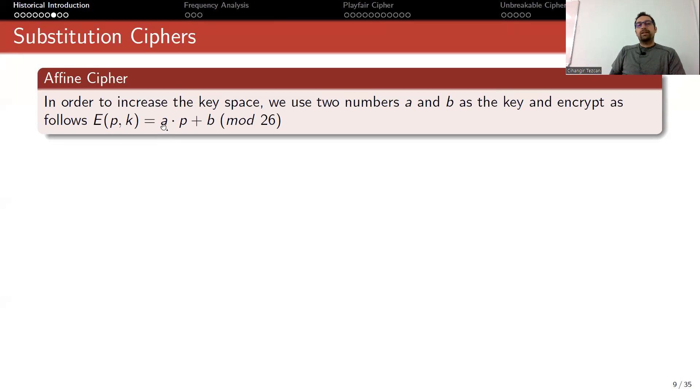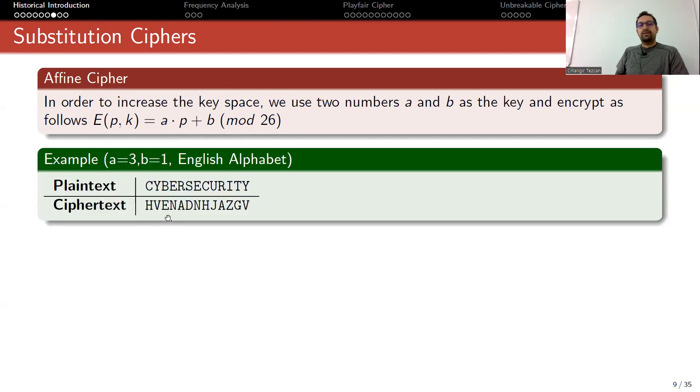This number exceeds 26 most of the time, so you perform modulo 26 operation so the result is less than 26, then look at the alphabet and see which letter corresponds to this number. Here's a basic example: I chose a equals 3 and b equals 1. A is 0, b is 1, c is 2. Here c is replaced with 2, you multiply with 3, add 1, then find the seventh letter in the alphabet and replace it, and so on.